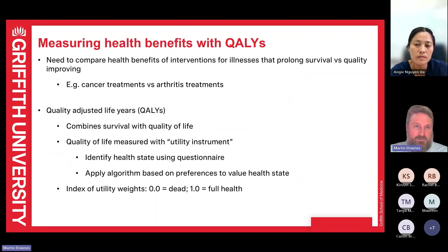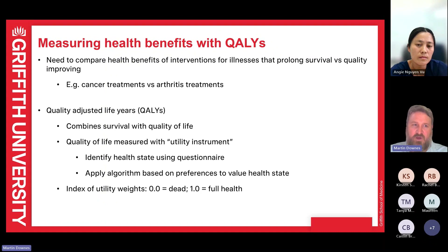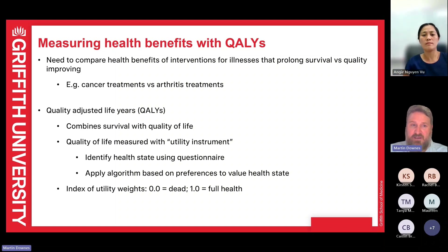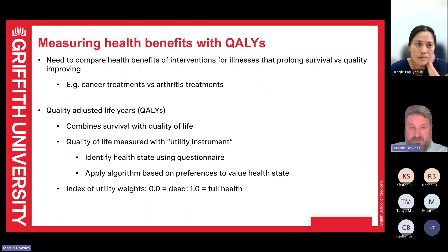QALYs are interesting because they're used on a national basis. They're a method to compare health benefits of interventions for illnesses that have prolonged survival versus quality, and they can be used across different diseases. If we're looking at cancer, our effectiveness is response, and for arthritis treatment we might be looking at reduction in pain. How do we compare a response rate in cancer with a pain rate in arthritis? That's where QALYs come in — they try to level the playing field regardless of the disease setting. Quality adjusted life year combines survival with quality of life.